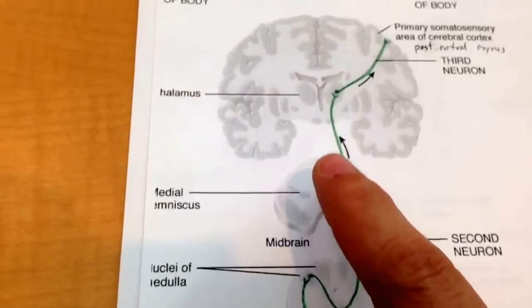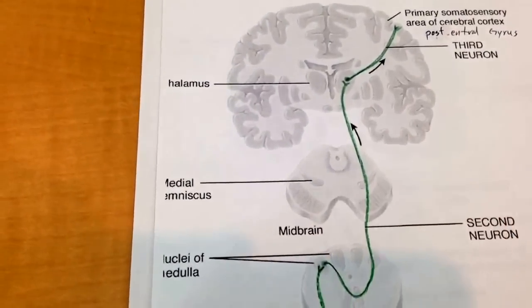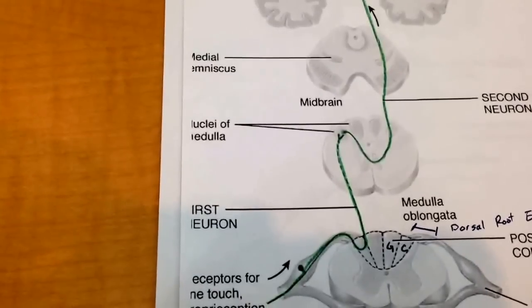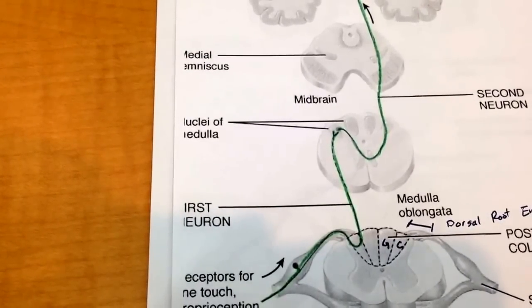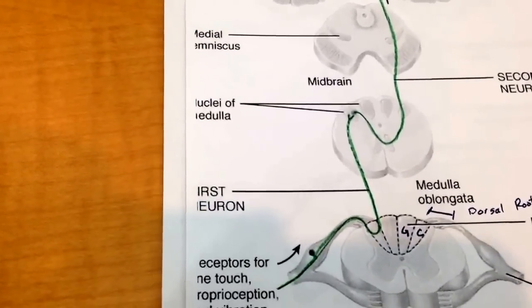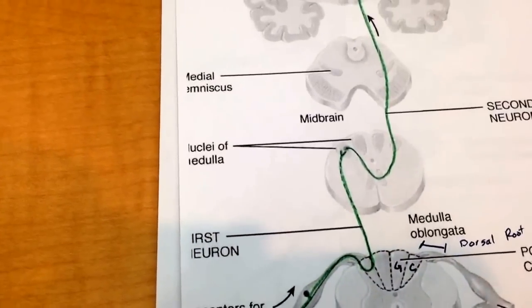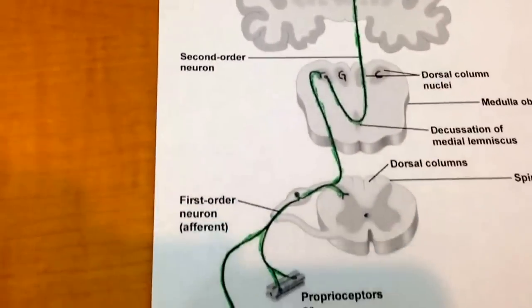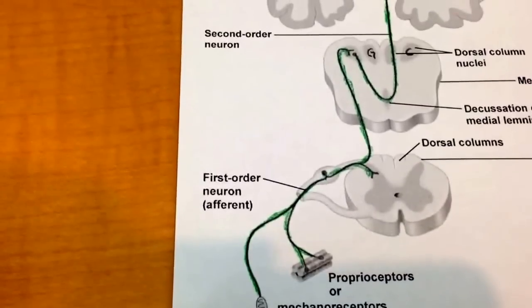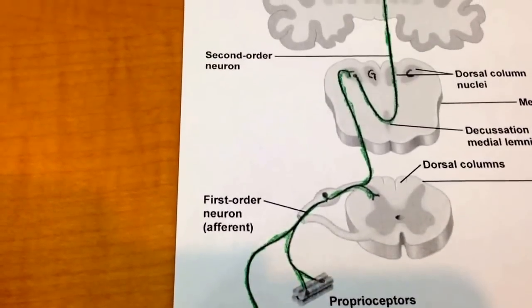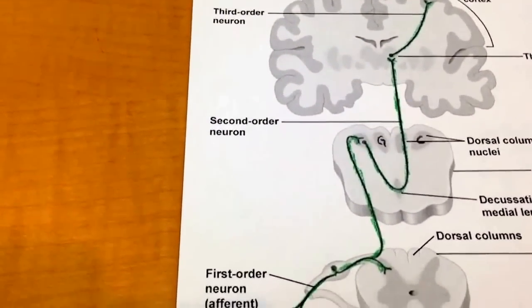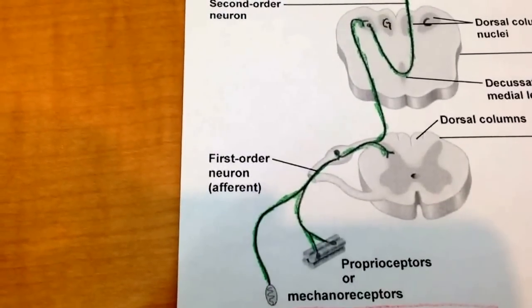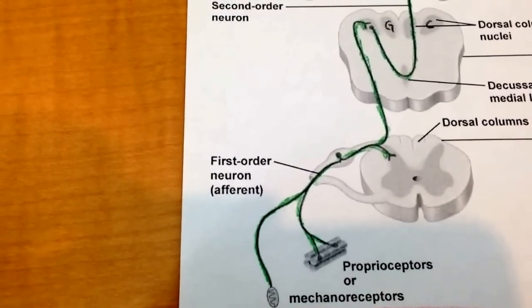So that's the dorsal column medial lemniscal pathway. Remember there are two branches: the gracile for the lower limb and the cuneate for the upper limb, but they send the same type of information — vibration, conscious proprioception, and discriminative touch.